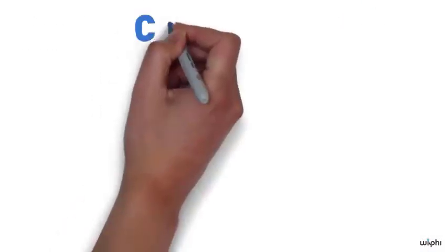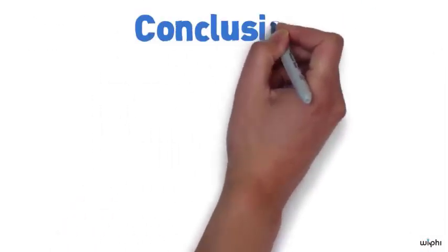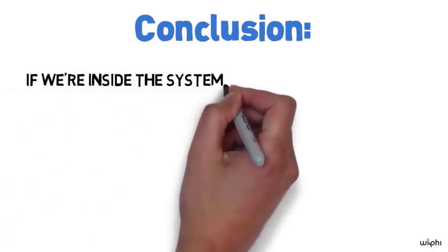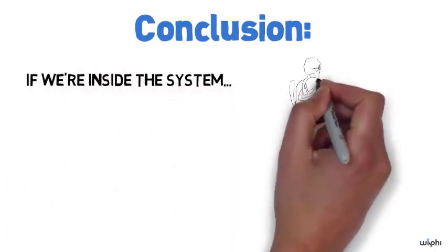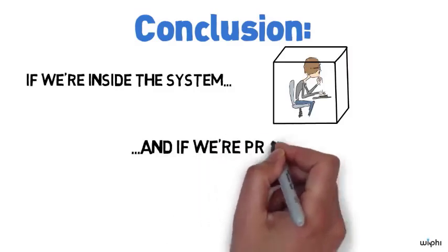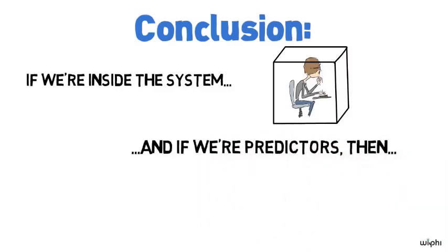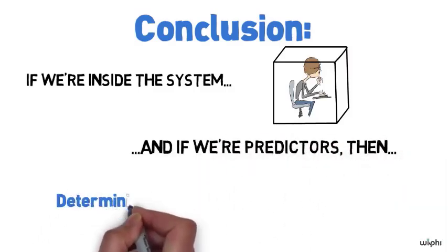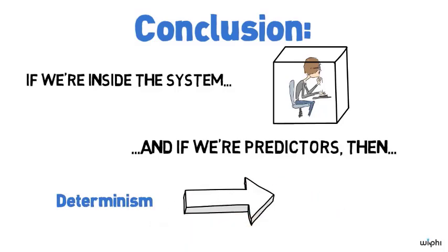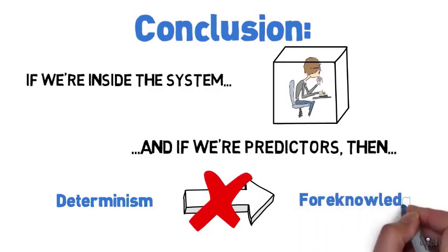So what conclusion can we draw? Well, I think the conclusion to draw is that if we are creatures who are inside the system, which in some obvious sense we are, and if we or others around us are predictors, then we can't infer from the truth of determinism to the possibility of foreknowledge. That doesn't show, I think, that free will is home and dry, but I think it does remove one of the most worrying aspects to free will.